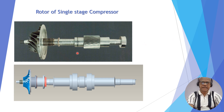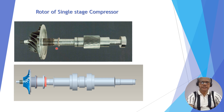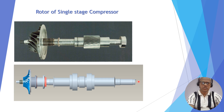We are discussing a single-stage compressor — one stage, one impeller. The rotor has a shaft, a gear attached to the shaft, and an impeller which is also attached or bolted to the shaft. This is an actual photograph of the rotor of a single-stage or one-impeller compressor. The diagram shown is of a similar single-stage rotor design.